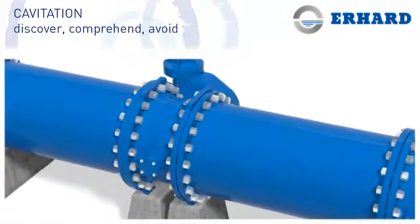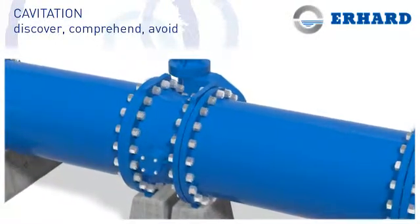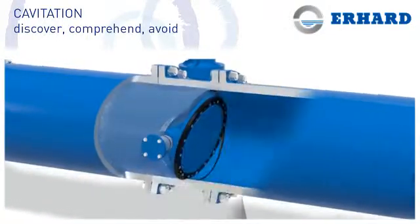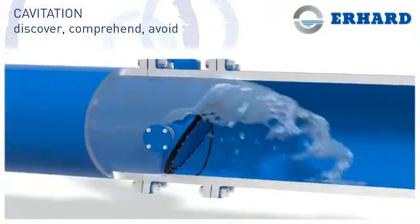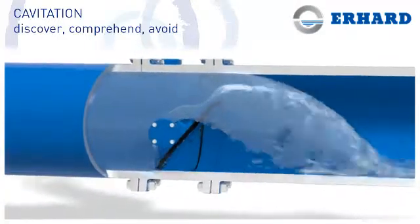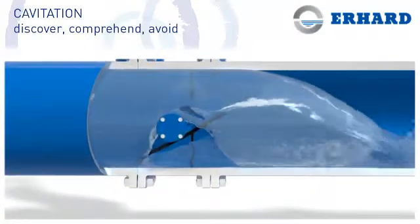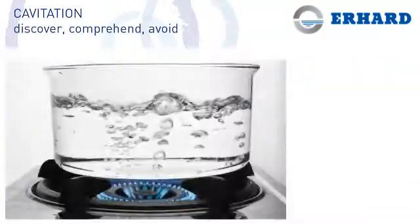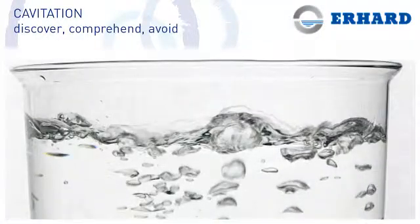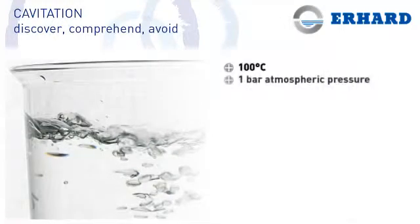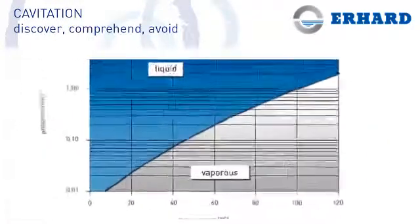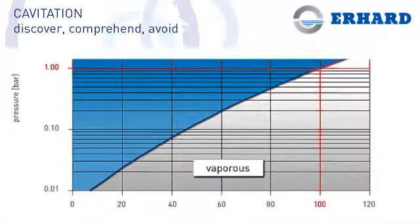Liquids, in our case water, evaporate due to a pressure drop and then liquefy again when the pressure rises. We all know that water evaporates at 100 degrees Celsius, but only at 1 bar atmospheric pressure. If the pressure drops, the boiling point of water drops too.